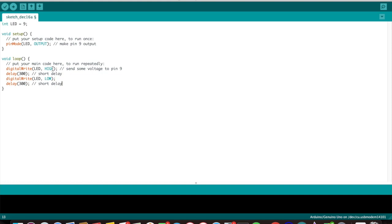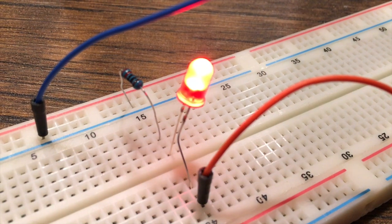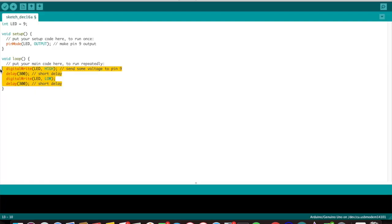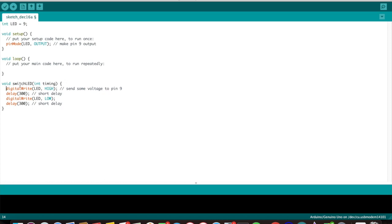Now that we have that, I'm gonna put these functions into a different function, switch LED, which basically is turning this on and off. I'm gonna pass in a variable called timing so that we can control how long the high voltage is getting sent to this LED. Once I have that function, I can use it to essentially switch this LED on and off for a certain amount of time.